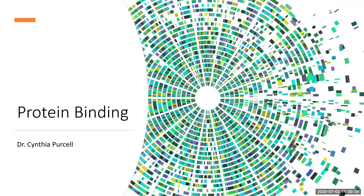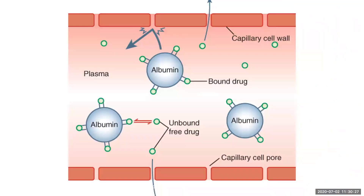Let's talk about protein binding to help you understand this important concept in pharmacodynamics. We're going to use one slide, and albumin is the protein we are choosing to talk about here. There are tons of proteins in the body, however albumin is the most abundant, and if somebody's albumin levels are not normal, that's going to change the way a drug travels and affects the body.